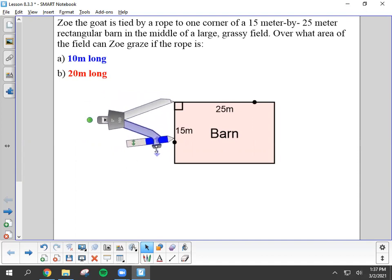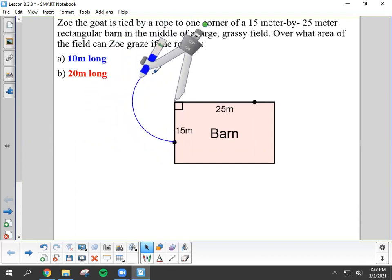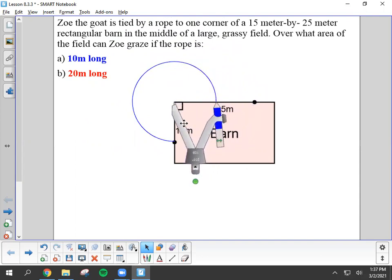If her rope is 10 meters long, it's going to reach about this far along the edge of the barn. Now, obviously, Zoe can't walk through walls, so she won't be able to go inside the barn, but she will be able to go all the way around like that.